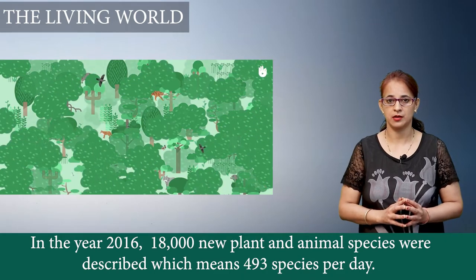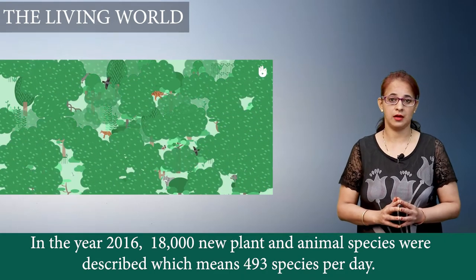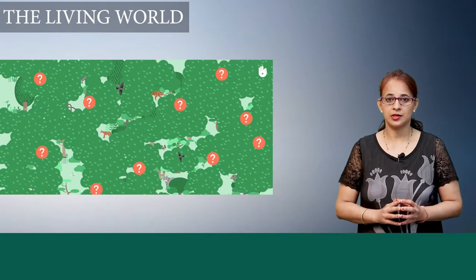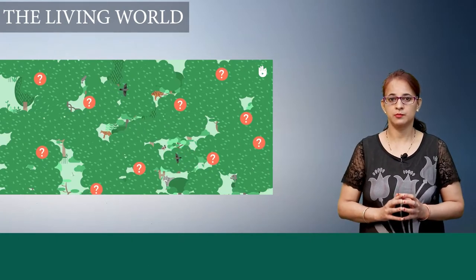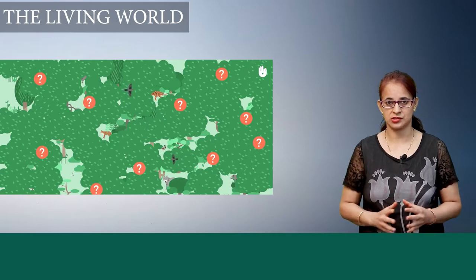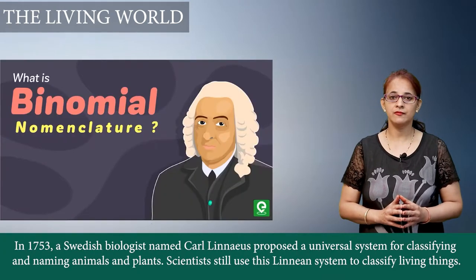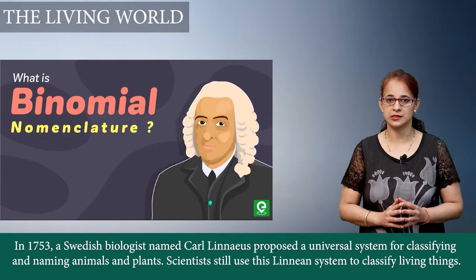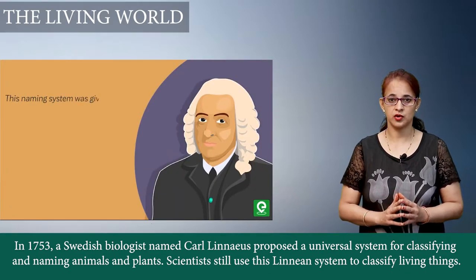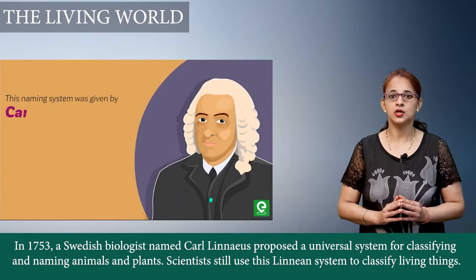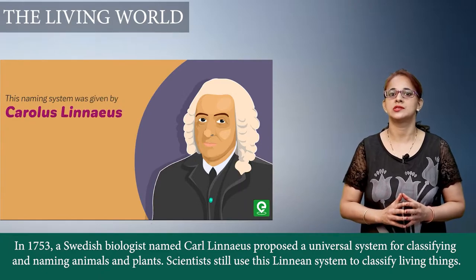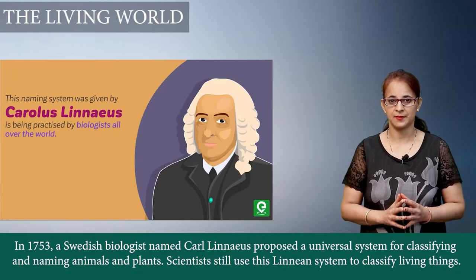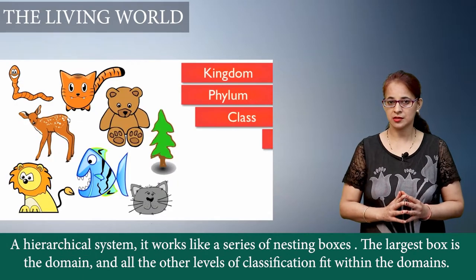So that is a lot — 493 species per day. Taxonomy is a branch based on the classification system, and in 1753 a Swedish biologist called Carolus Linnaeus was the first one to develop a universal classification system which is still being used by scientists today.